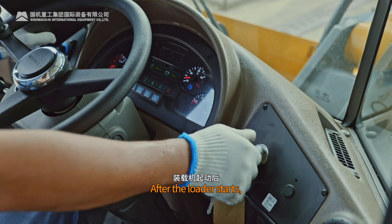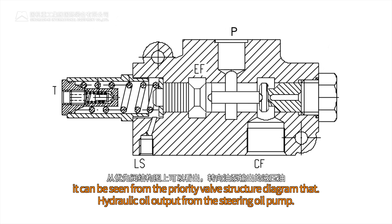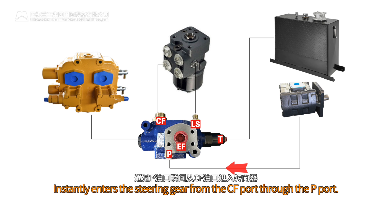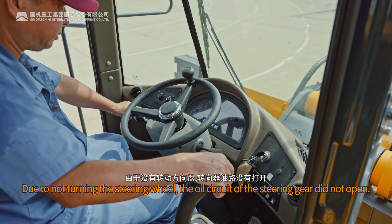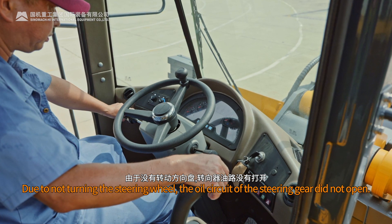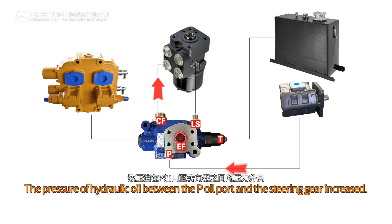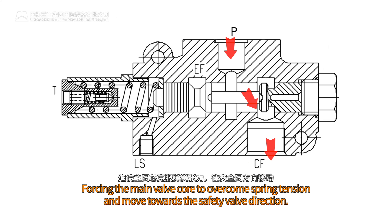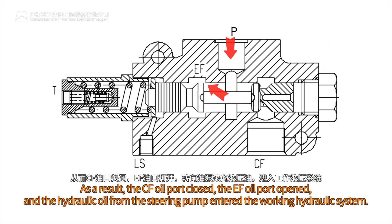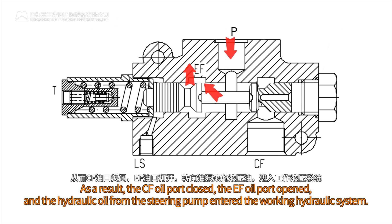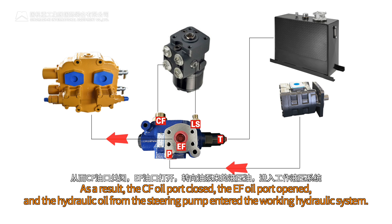After the loader starts, it can be seen from the priority valve structure diagram that hydraulic oil output from the steering oil pump instantly enters the steering gear from the CF port through the P-port. Due to not turning the steering wheel, the oil circuit of the steering gear did not open. The pressure of hydraulic oil between the P-port and the steering gear increased, forcing the main valve core to overcome spring tension and move towards the safety valve direction. As a result, the CF oil port closed and the EF oil port opened, and the hydraulic oil from the steering pump entered the working hydraulic system.